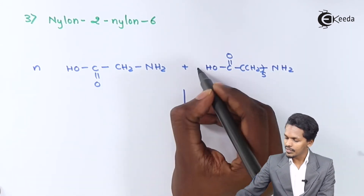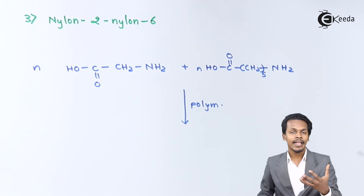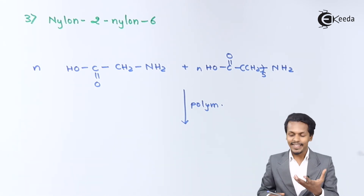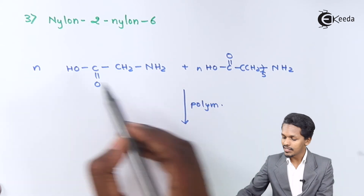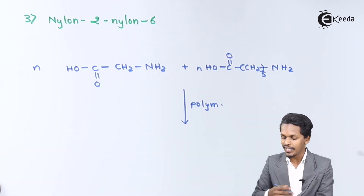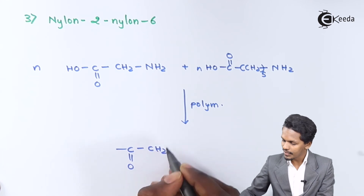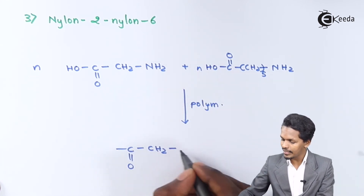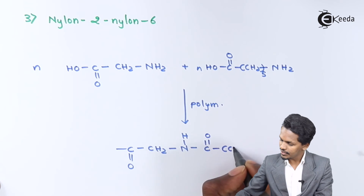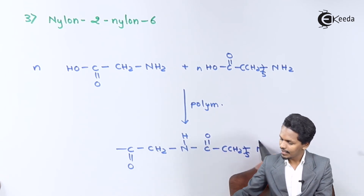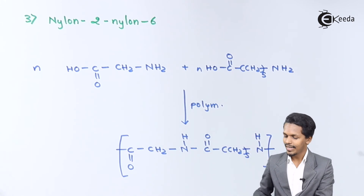The polymerization reaction proceeds such that the OH from the carboxylic acid and one H from the amine group are eliminated as water, forming an amide linkage. The repeating unit of the product is: -C(=O)-CH2-NH-C(=O)-(CH2)5-NH-. This repeating unit is the structure of Nylon 2, Nylon 6.